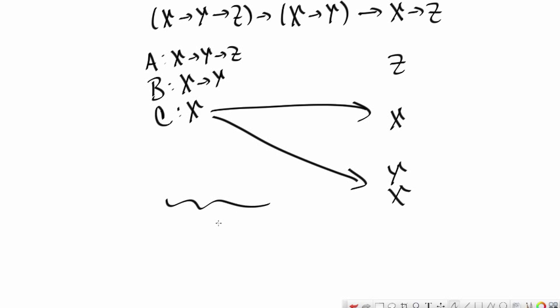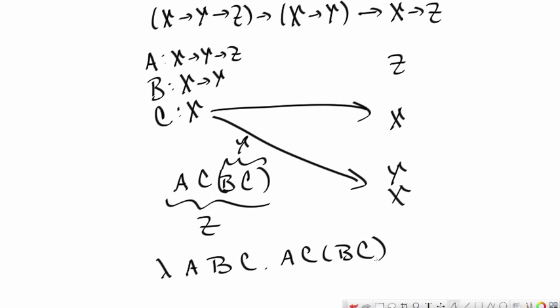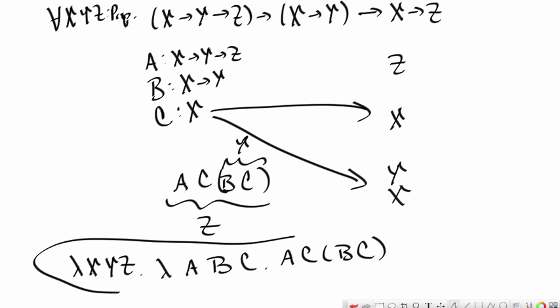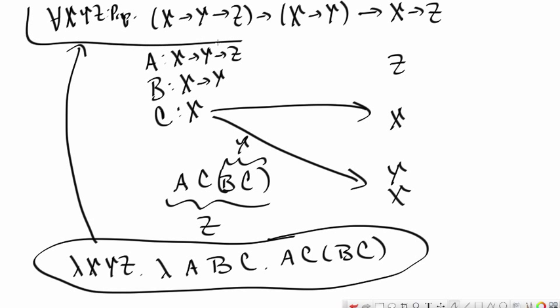Well, we started off needing something of type z. Then we get it by applying a to two arguments. The first one should be something of type x which we know will be c and the second one should be something of type y which we get by applying b to c. So, the corresponding proof term will be lambda a b c a c b c. Or if we close the proposition by starting it with for all x, y, and z. Then we have the proof term lambda x, y, z lambda a b c a c b c. So, this is the proof term for this proposition.